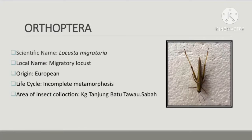Now let's go to my insect collection. First is from order Orthoptera — this is a grasshopper and the scientific name is Locusta migratoria. The local name is migratory locust, originating from Europe. The life cycle is incomplete metamorphosis, which has three stages: egg, nymph, and adult. I collected it in my village area, Kampung Tanjung Batu, Tawau, Sabah.